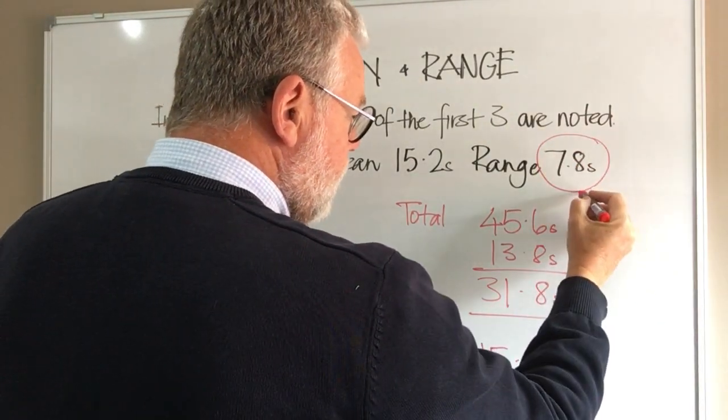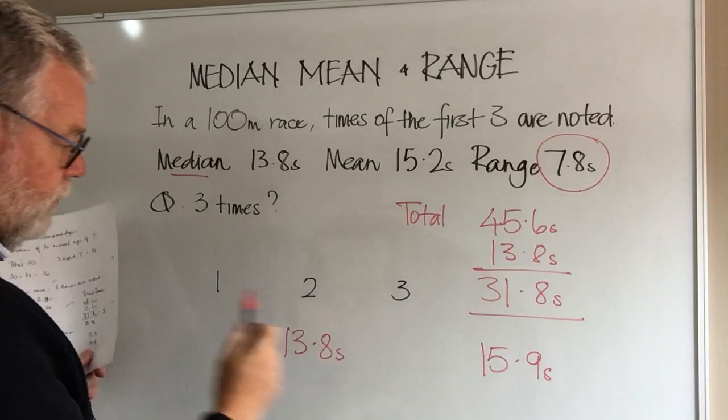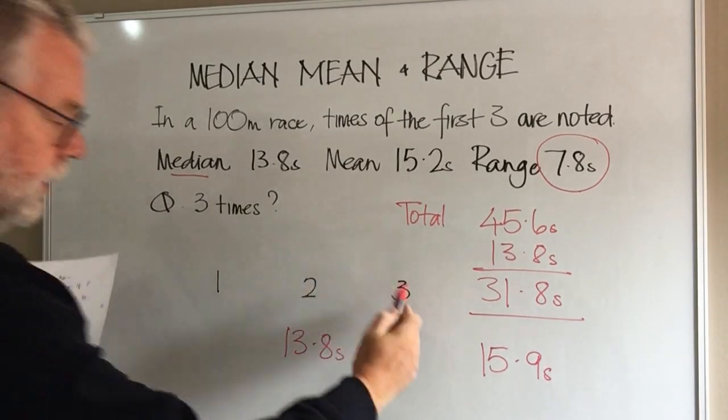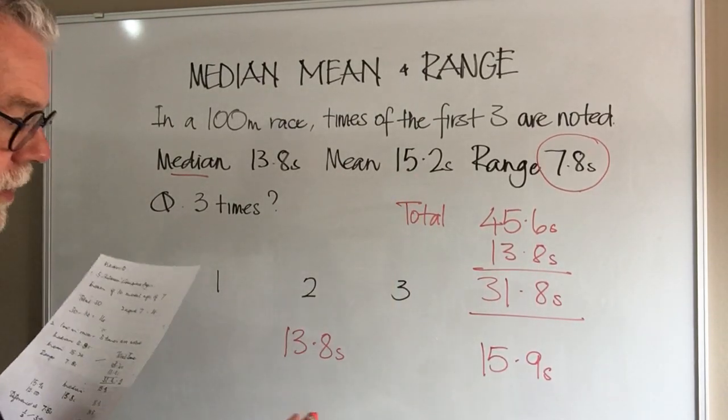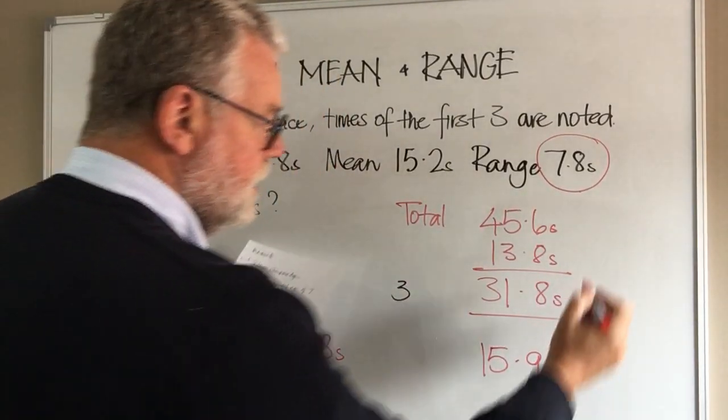So let's think: we've got to create a difference between the first and the last, because that's what our range is. We need to create a difference of 7.8 seconds.